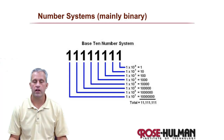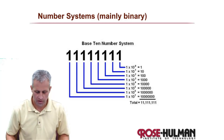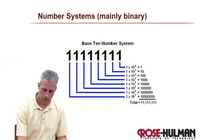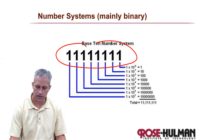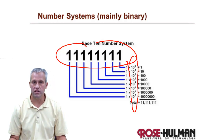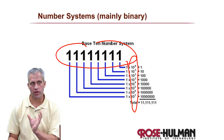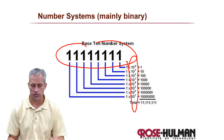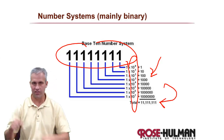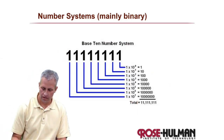Welcome back. Today we're going to talk about number systems. The number system you're most familiar with is decimal. You can think about how it works by looking at the value each place has — 10 to the zero, 10 to the first, and so on — and you can add it all up to get the same number back.